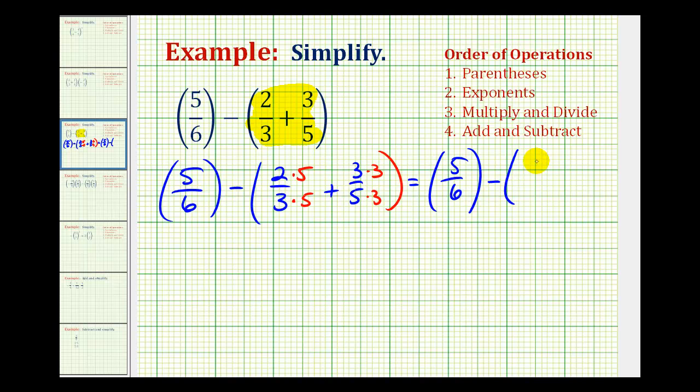So we'll have ten-fifteenths plus nine-fifteenths. So now we can determine the sum. We'll have five-sixths minus, this will be nineteen-fifteenths.